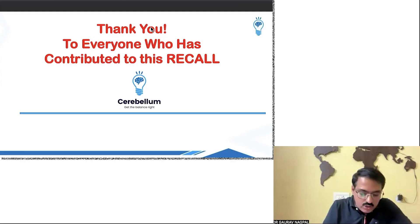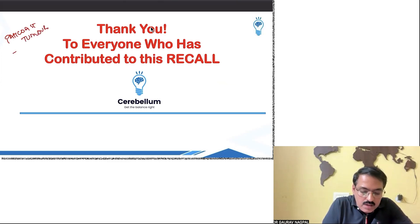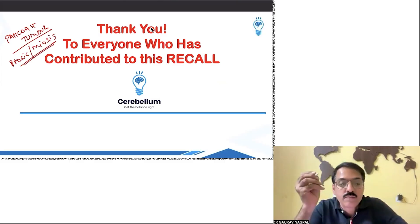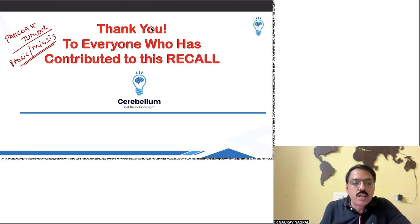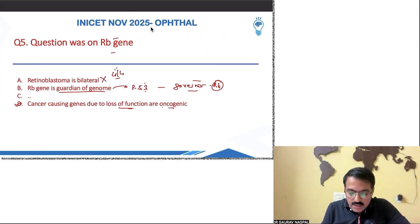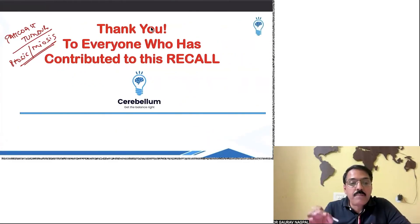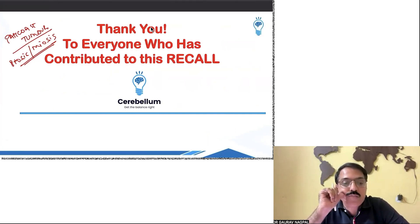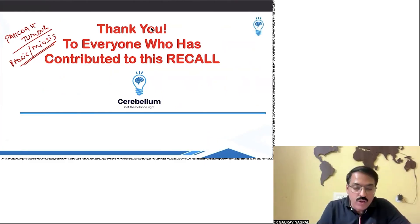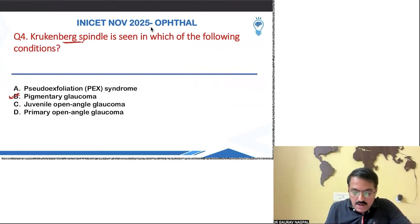One question Dr. Spurser mentioned is about Pancoast tumor, where the patient presents with ptosis and miosis — Horner syndrome. That was also part of the question paper. Pigment dispersion syndrome: Kruckenberg spindle is its classic finding — pigment, pigment dispersion syndrome.